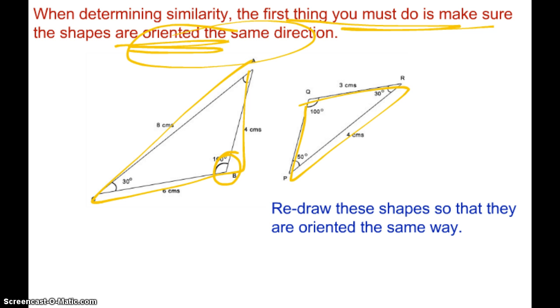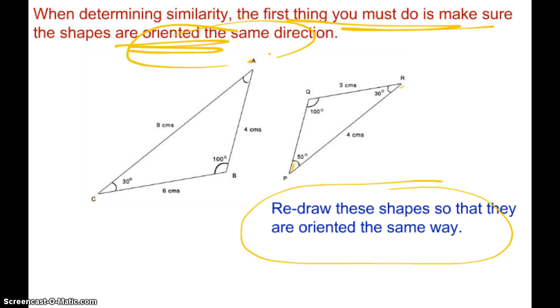So when I say oriented the same direction, I mean like facing the same way so that they look like they're in the same position. These are not in the same position. It's much easier to determine your corresponding angles and corresponding sides when you do that. So what you really want to do is redraw these shapes so that they're oriented or facing the same way.